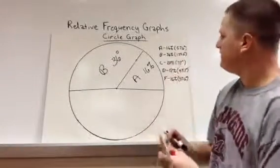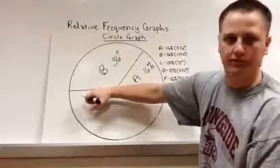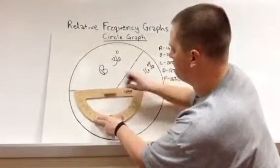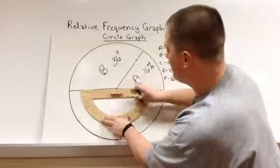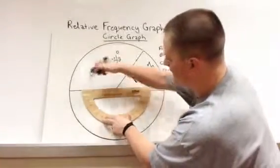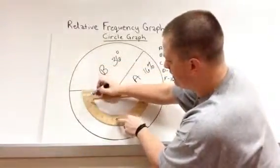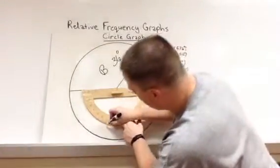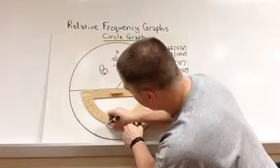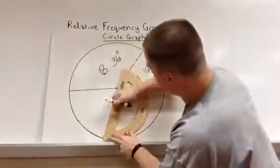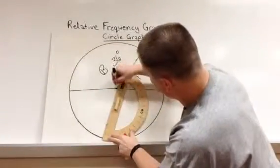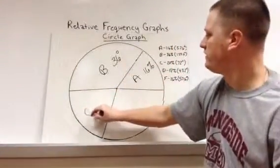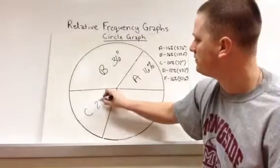Then we've got 72 degrees here. Now this is my new starting line. So I've got to actually turn my protractor to the side and keep counting. 10, 20, 30, there's 70. So just beyond 70 here. Then I'm going to draw my straight line. So this now is our C at 20%.